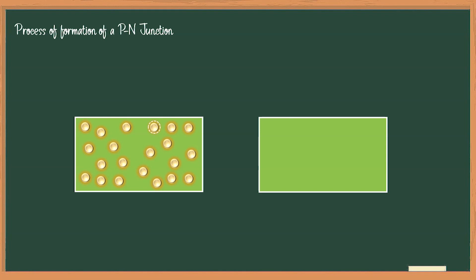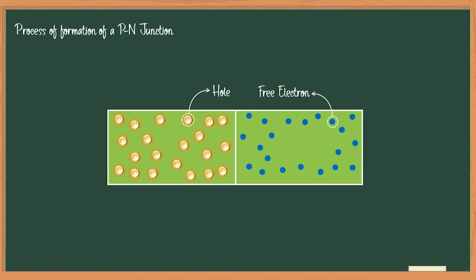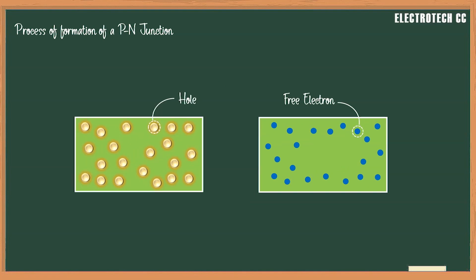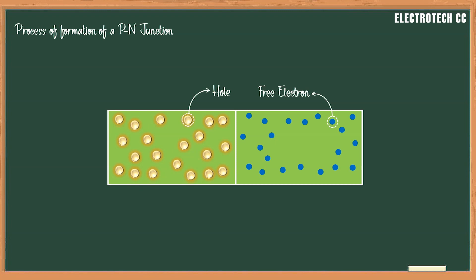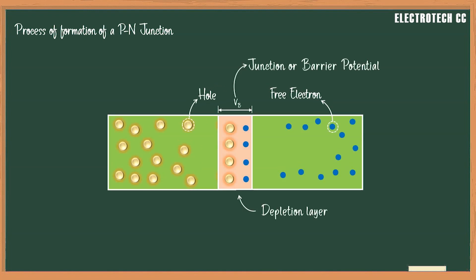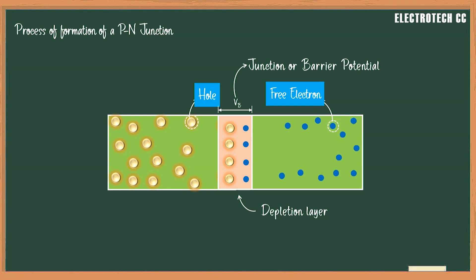The process of formation of a PN junction: holes on the P side diffuse into the N side and combine with free electrons, and free electrons from the N side diffuse into the P side and combine with holes. Diffusion current decays exponentially both with time and distance from the junction. Due to the departure of free carriers from both sides of the junction, a depletion layer is formed. It contains only immobile and fixed ions of opposite charges. These uncovered fixed ions set up a potential barrier across the junction. The potential difference opposes the diffusion of free majority charge carriers from one side of the junction to the other until the process is completely stopped.